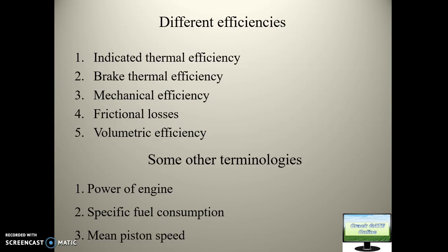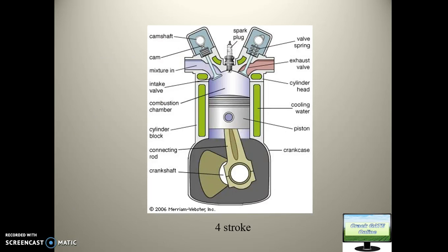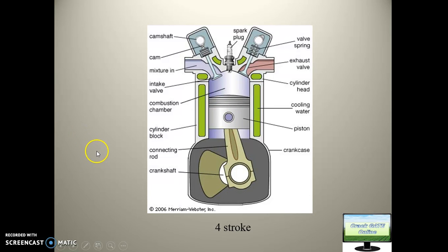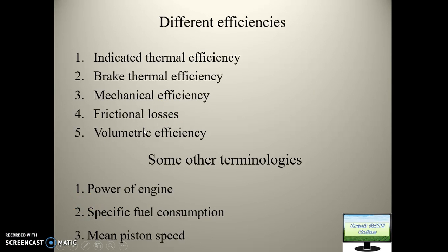The second efficiency is brake thermal efficiency. Brake power is the power available at the flywheel. Some power acts on the piston — that is the indicated power — but due to linkages and friction, some power is lost, and less power reaches the flywheel; that is the brake power. So: BP = IP − F (brake power equals indicated power minus frictional losses). Therefore, brake thermal efficiency = brake power divided by (mass of fuel × calorific value).